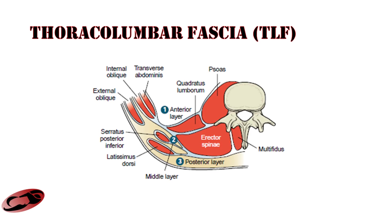Now let's look at the layers of the thoracolumbar fascia. The muscles mentioned — the lats, the serratus posterior inferior, external obliques, and trapezius — all make up the superficial or posterior layer of the thoracolumbar fascia. The internal obliques, transverse abdominus, and going further deep to the muscles of the back — the erector spinae, the quadratus lumborum, and the psoas muscles — those all make up and connect to the anterior or deep layer of the thoracolumbar fascia.